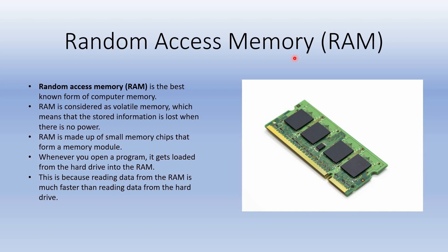RAM is volatile in nature — volatile means all the data stored in it is lost when we cut off the power supply to the CPU. RAM is made up of small memory chips that form a memory module. It is a short-term memory where data is stored as the processor needs it. This is not to be confused with long-term memory stored on your hard drive, which stays there even when your computer is turned off.